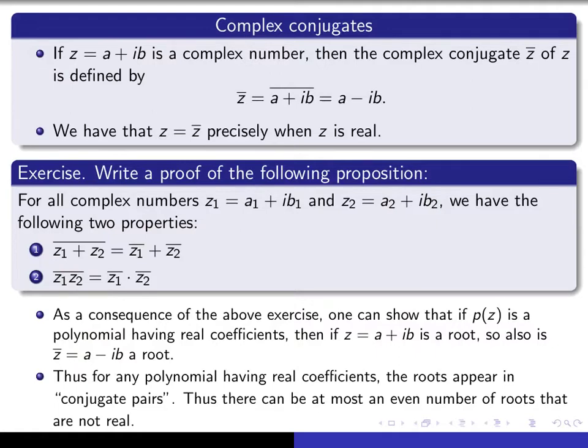Now, if the root is non-real, then that means b is non-zero, and so z and z-bar are definitely going to be different from each other. So if it has a non-real root, you always produce another non-real root. So the non-real roots, there have to be an even number of non-real roots, because whenever you get one that's non-real, you automatically get its conjugate, which is also non-real. Now, we're going to make use of that fact in order to prove the next result.